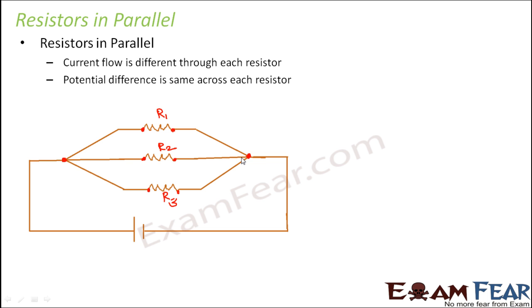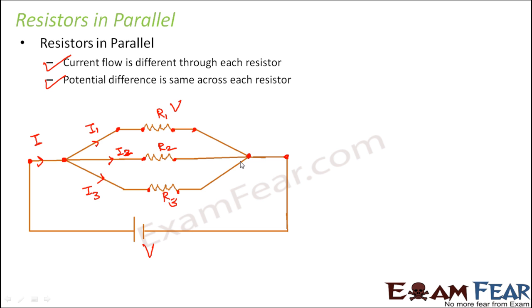In parallel combination, the current flow is different through each resistor. If current I flows through the circuit, it gets divided into different values along the three resistors: I1, I2, and I3. However, the same potential difference V is seen across each resistor. Because the potential difference between the two common points is V, that means the potential difference across each individual resistor is also V. So the potential difference across each resistor is the same.